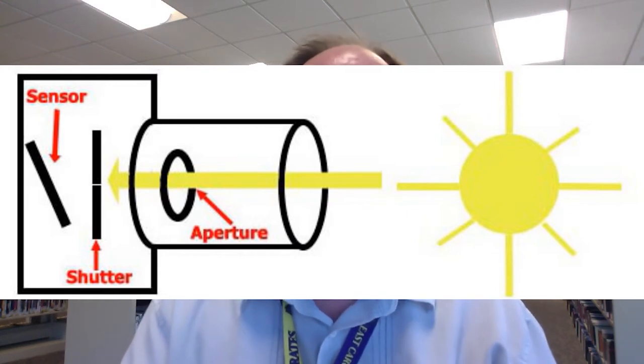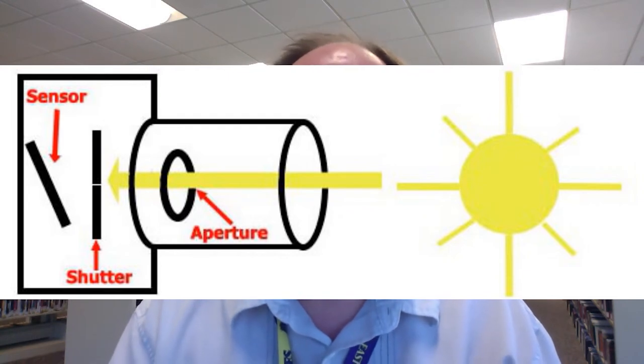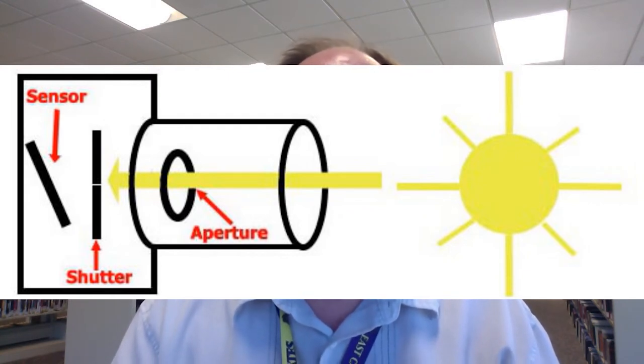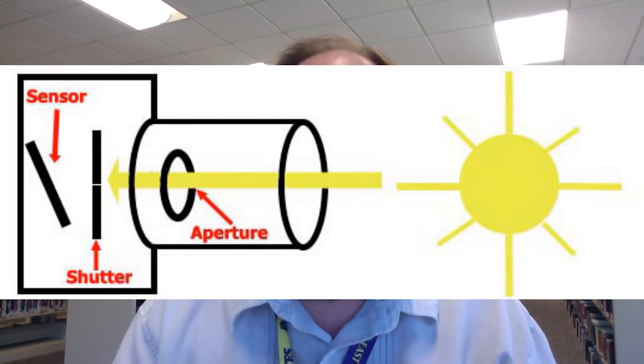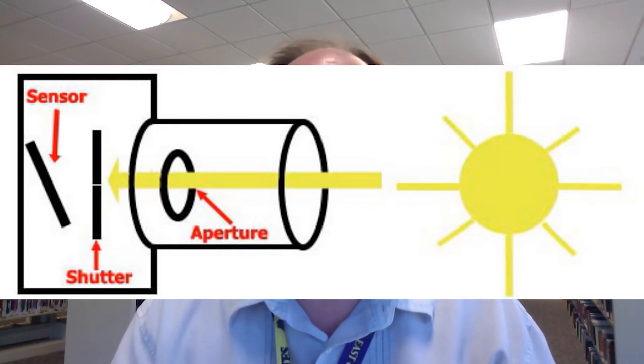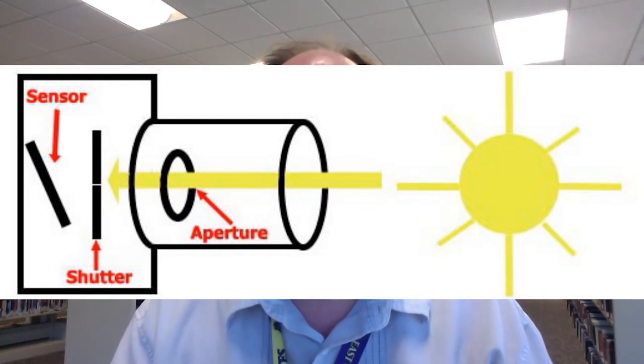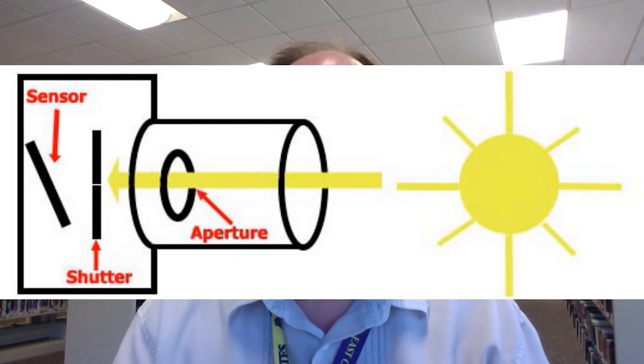Conversely, the shorter the time it is open, the less light gets in and your image will be darker. The aperture is the size of the hole the light travels through — the bigger the hole the more light gets in, and the smaller the hole the less light gets in. We'll talk more in depth about the aperture in next month's video, but the important thing to know now is that the shutter speed and aperture settings work in tandem to achieve a proper exposure. The goal of the photographer is to choose a shutter speed and aperture setting that will result in a photograph that is not too bright and not too dark.